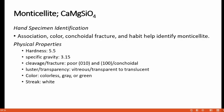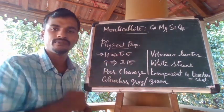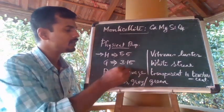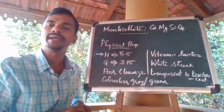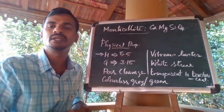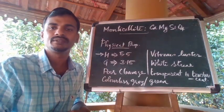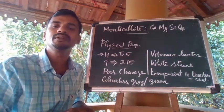Now let us discuss a rare olivine named monticellite, with chemical composition CaMgSiO4. It may be identified by its association, color, conchoidal fracture, and habit. Its physical properties include a hardness of 5.5, specific gravity of 3.15, poor cleavage, colorless to green or grey color, vitreous luster, and it is optically transparent to translucent with a white streak.